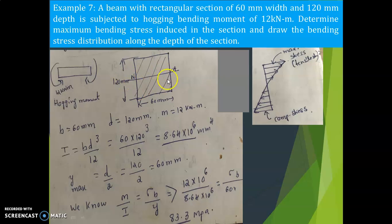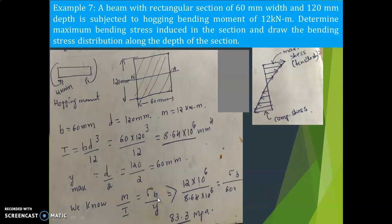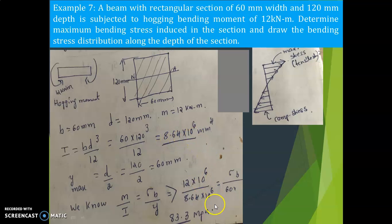The neutral axis is exactly at the center, so Y_max = D/2 = 120/2 = 60 mm. Now using the formula M/I = sigma/Y: M is 12 kNm which converts to 12 × 10⁶ N·mm, divided by I = 8.64 × 10⁶, equals sigma B divided by Y = 60. Solving, we get a maximum bending stress of 83.3 N/mm².